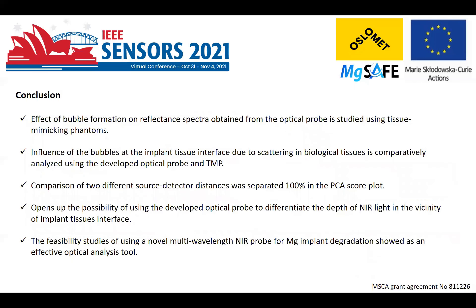In conclusion, the influence of bubbles at the implant tissue interface on scattering in biological tissues is comparatively analyzed using the developed optical probe and tissue mimicking phantom. It opens up the possibility of using the developed optical probe to differentiate the depth of near infrared light in the vicinity of the implant tissue interface.